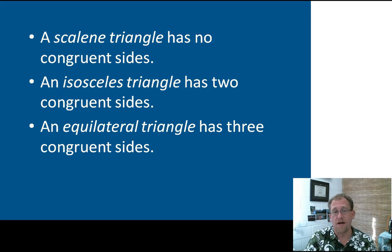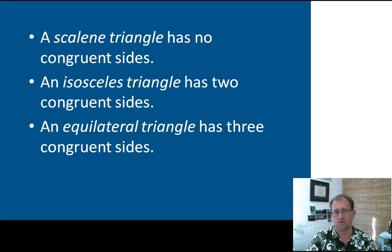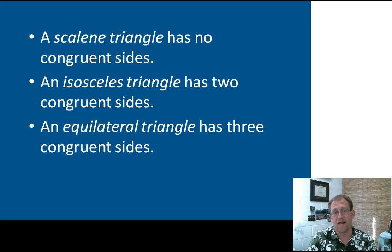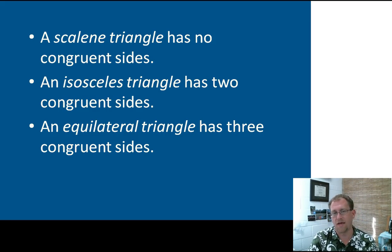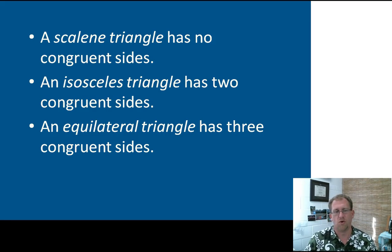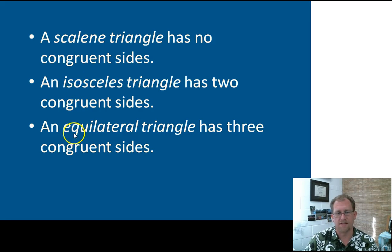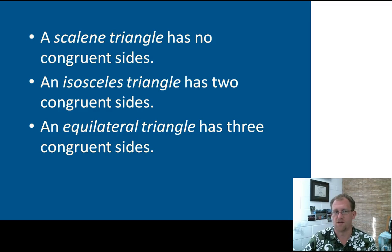More terminology: you can name triangles by angle measure or by the lengths of the sides. If all the sides of a triangle have different lengths, we call it scalene. If two sides have the same length, we call it isosceles. If all three sides have the same length, we call it equilateral. 'Iso' means the same or in the middle, and 'equilateral' means equal. So: all sides equal is equilateral, two sides equal is isosceles, no sides equal is scalene.